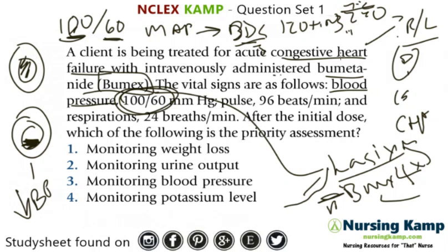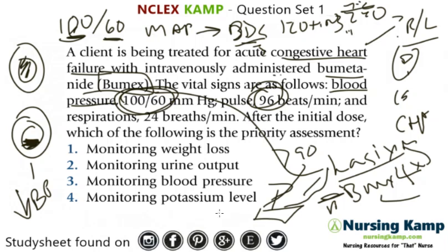The heart rate is 96 — that's a problem. Greater than 90 on a heart rate means that's a warning sign, a potential problem in the future. It makes you wonder whether their blood pressure is actually lower than it appears. Respirations are 24, which is above the normal range of 16 to 20.